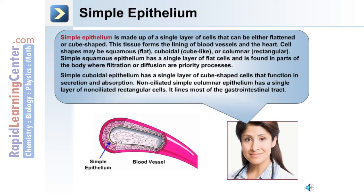When epithelial cells are in a single layer, they are called simple epithelium. They can either be flattened or cube-shaped. Simple epithelium forms a lining of blood vessels and the heart. The cell shapes may be squamous or flat, cuboidal or cube-like, or columnar, which are rectangular. Simple squamous epithelium has a single layer of flat cells and is found in parts of the body where filtration or diffusion is a priority.